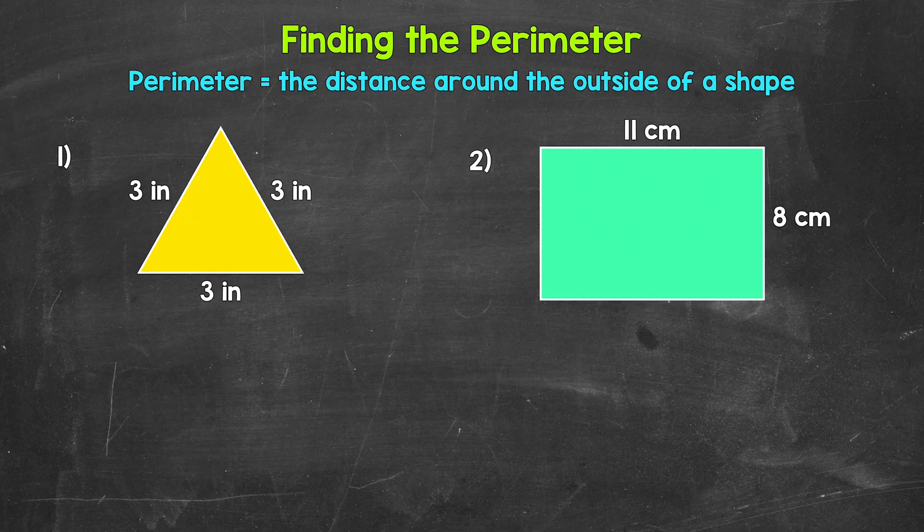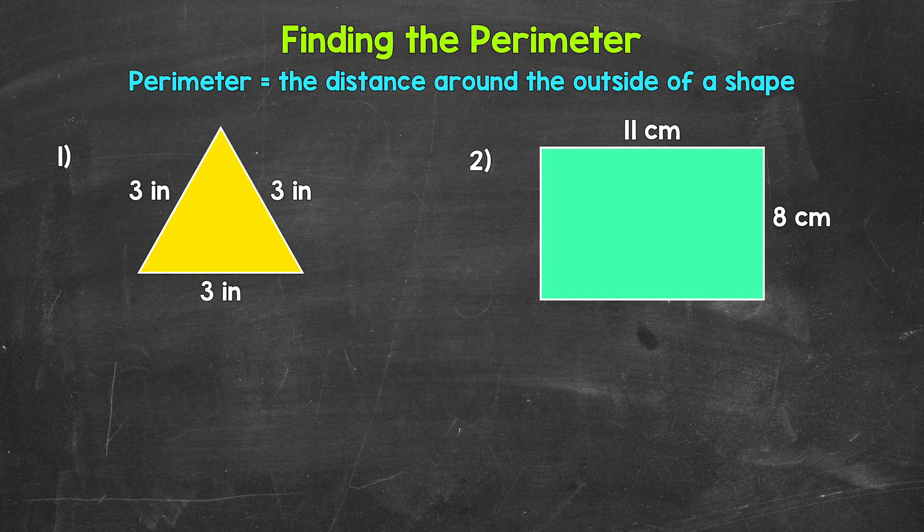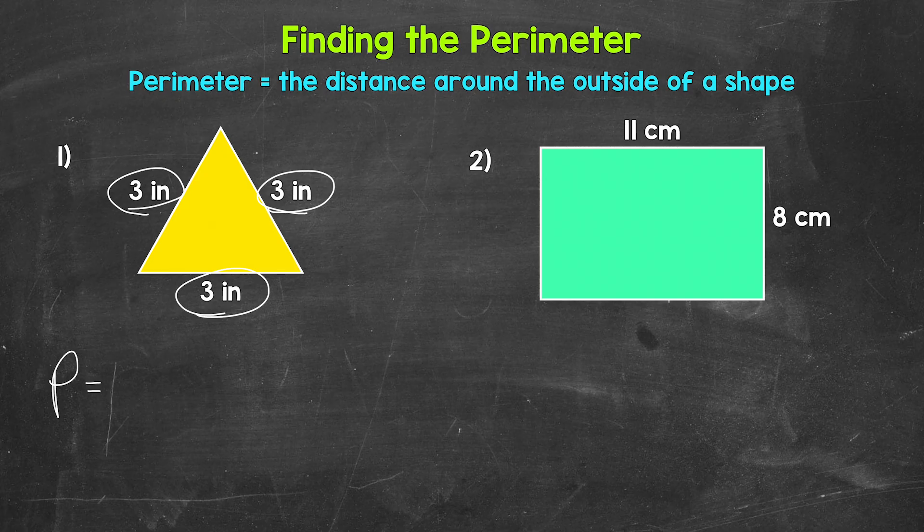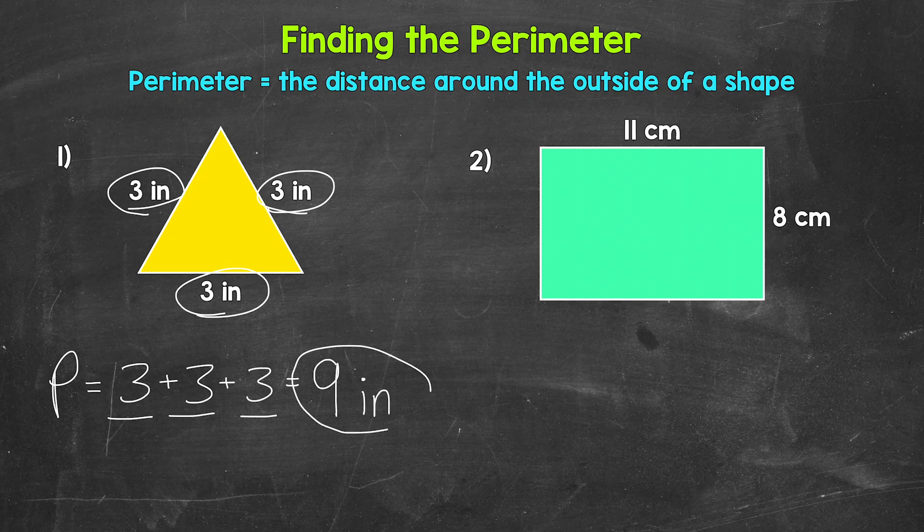Let's jump into number one, where we need to find the perimeter of that triangle. And all we need to do here is add the side lengths. So three inches plus three inches plus three inches. So perimeter equals, and I'm using P for perimeter here, three inches plus three inches plus three inches. Three plus three is six plus three is nine. And this is inches. So the perimeter of that triangle is nine inches.